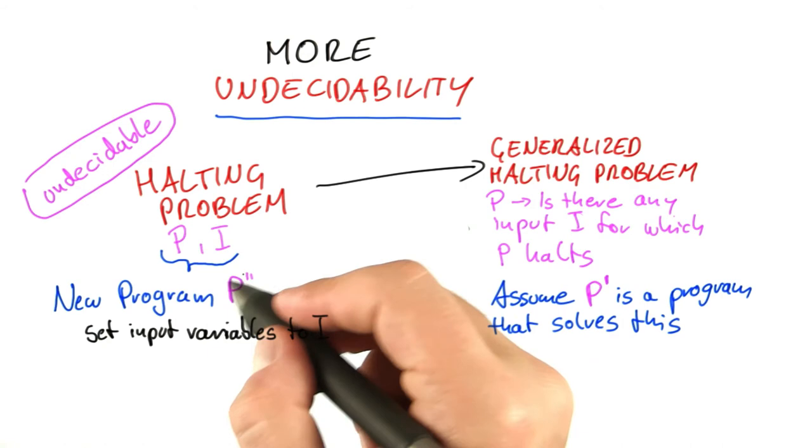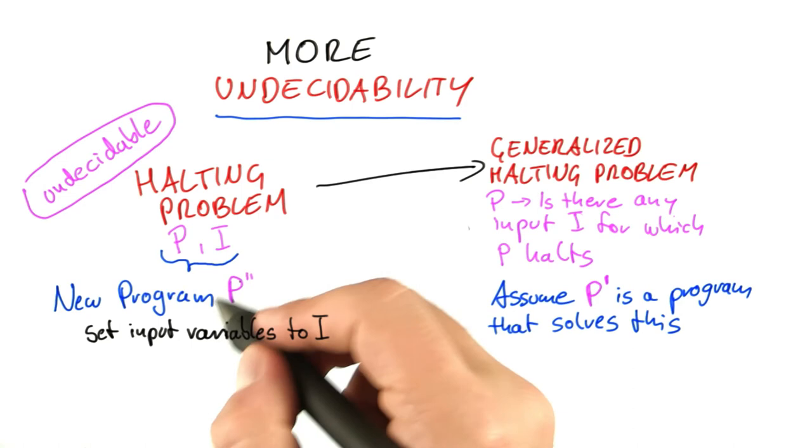would be set the input variables to I. And that is now part of the program code of this program here. Here it was a separate input and now it's part of the program code.